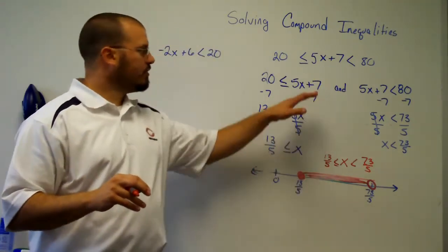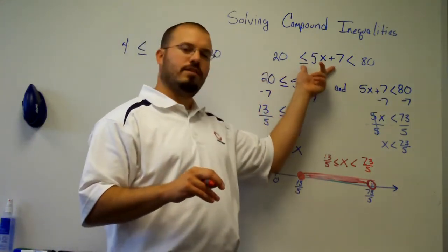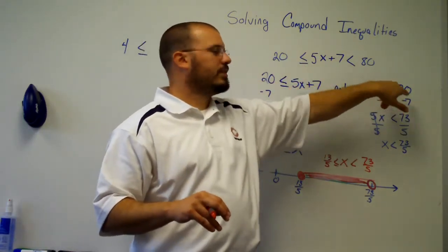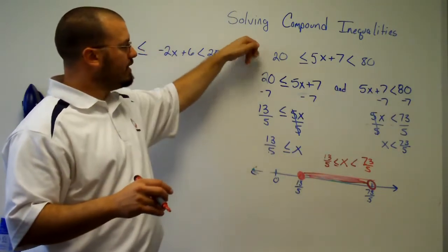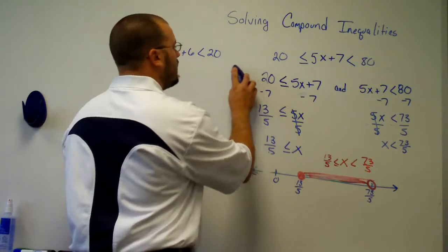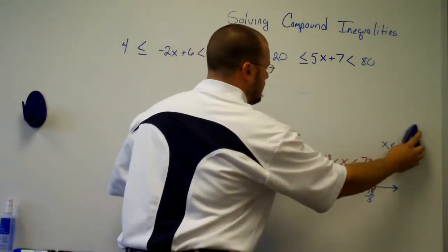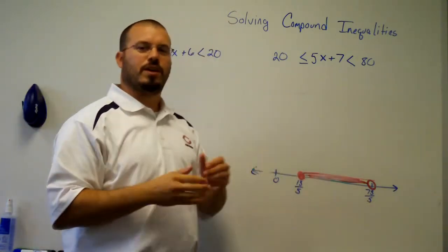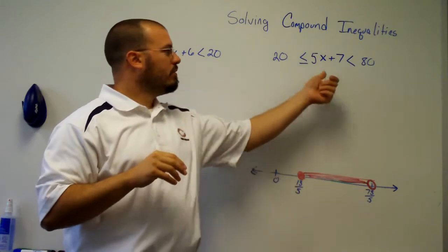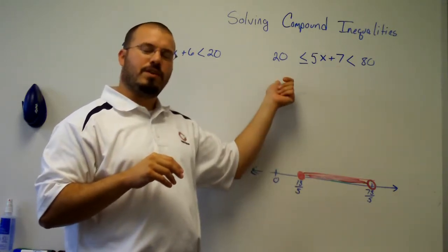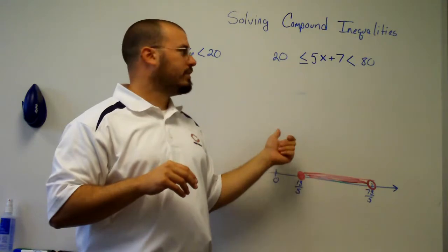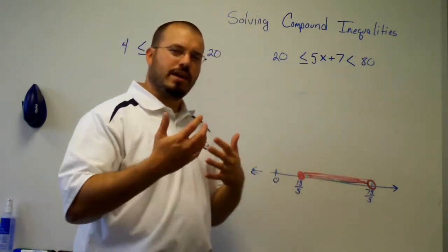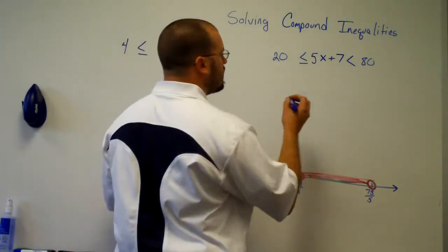Now the second way to solve this: instead of splitting the inequality into its two parts — 20 ≤ 5x + 7 and 5x + 7 < 80 — you can work with the whole inequality all at once. The steps we took for both individual inequalities were identical: subtract 7 from both sides, then divide by 5. Since it was the exact same work, we can do it all at once.